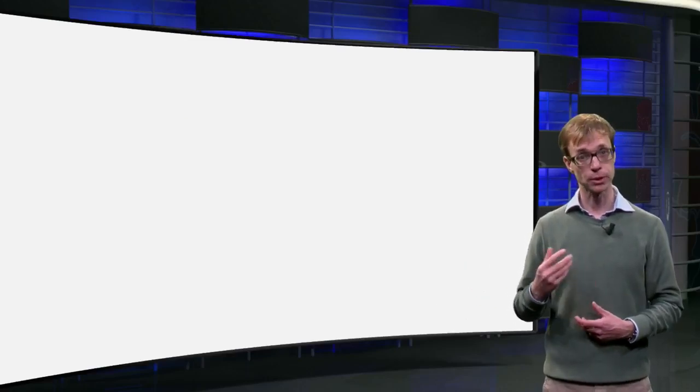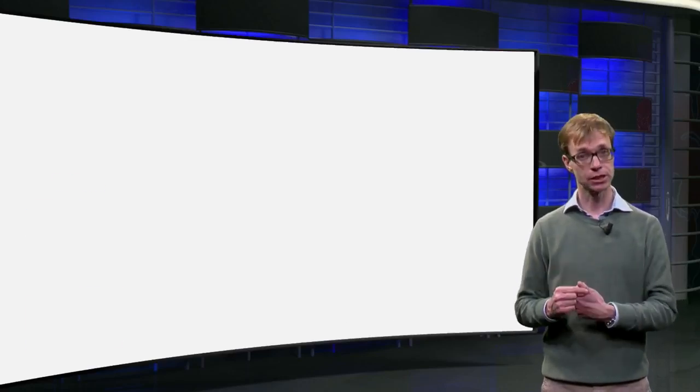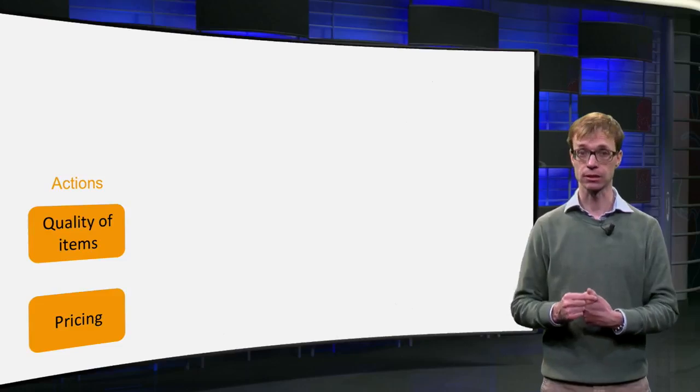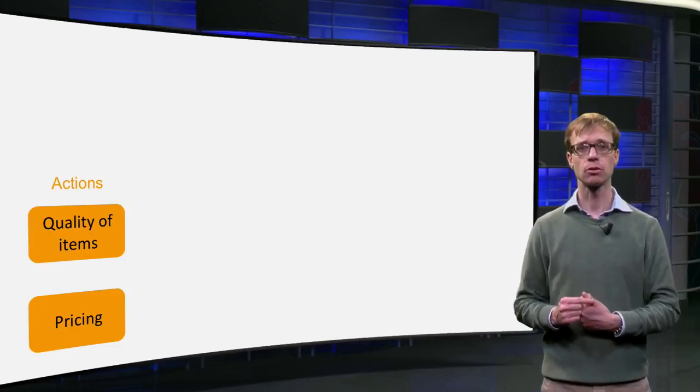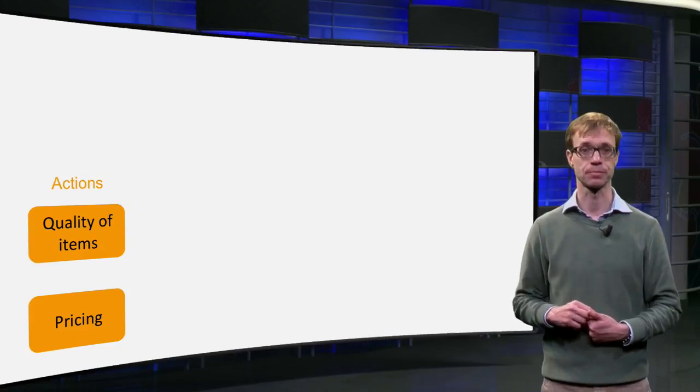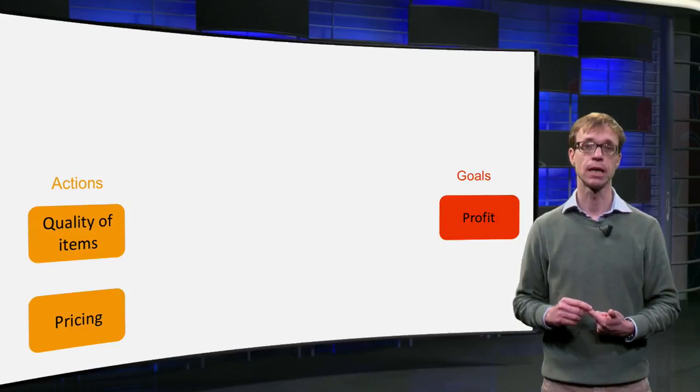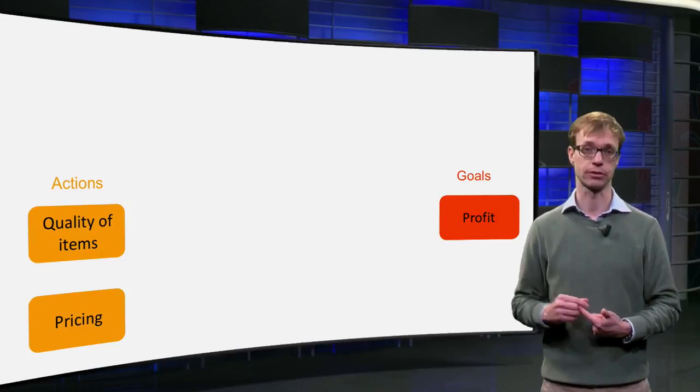The cognitive maps that we use contain four types of factors. Actions show the decisions an actor can take. A shop owner can decide on the quality of items on sale and on their pricing. Goals describe the values of a decision maker. A goal might be to make a high profit.